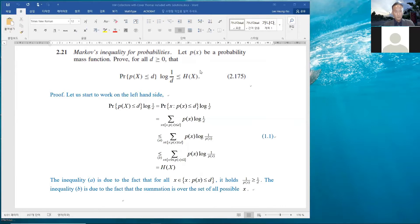And then we need to prove for all d greater than or equal to zero that this inequality holds. So here on this side, we have entropy, and on this side, we have something new. So d is the fixed parameter.